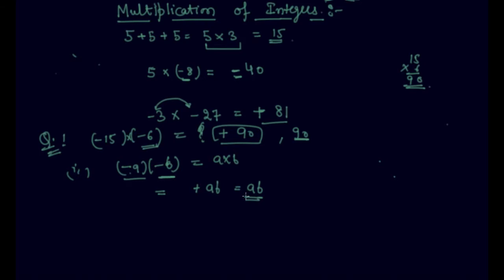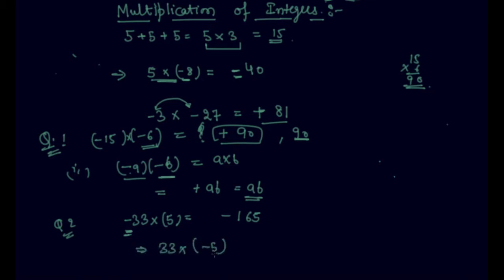Let me give you one more question based on positive and negative multiplication. If you have to multiply negative 33 into positive 5, since there is only one negative sign, the answer is negative 165. This would be the same as 33 into minus 5, because here also there is only one negative sign. I hope you are clear about how to multiply two integers whether they are positive, negative, or a combination of both.